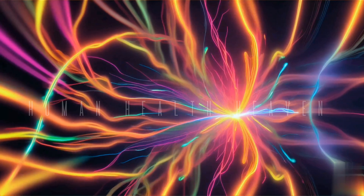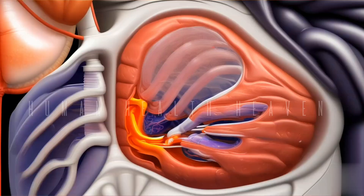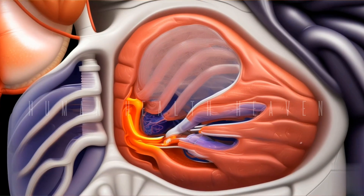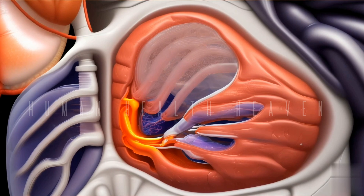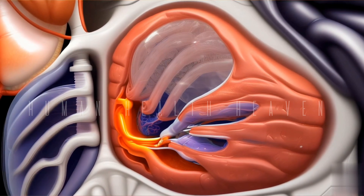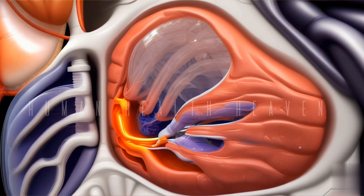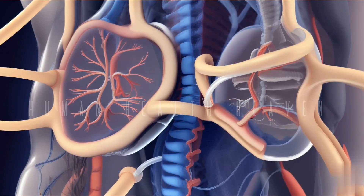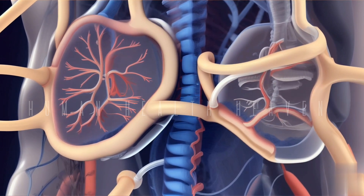In summary, the pleura is a critical component of the respiratory system, providing a protective covering for the lungs, facilitating smooth movement during breathing, and contributing to the maintenance of lung function within the thoracic cavity.